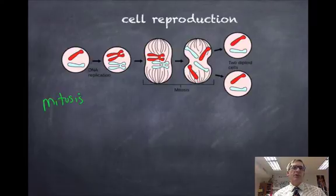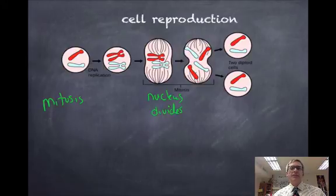In mitosis, the nucleus divides, and the chromosomes are evenly distributed between two daughter cells. Well, to get that process started, we had to replicate our DNA. That occurred during the S phase of the cell cycle. These chromosomes actually duplicated themselves. They replicated their identical copies.